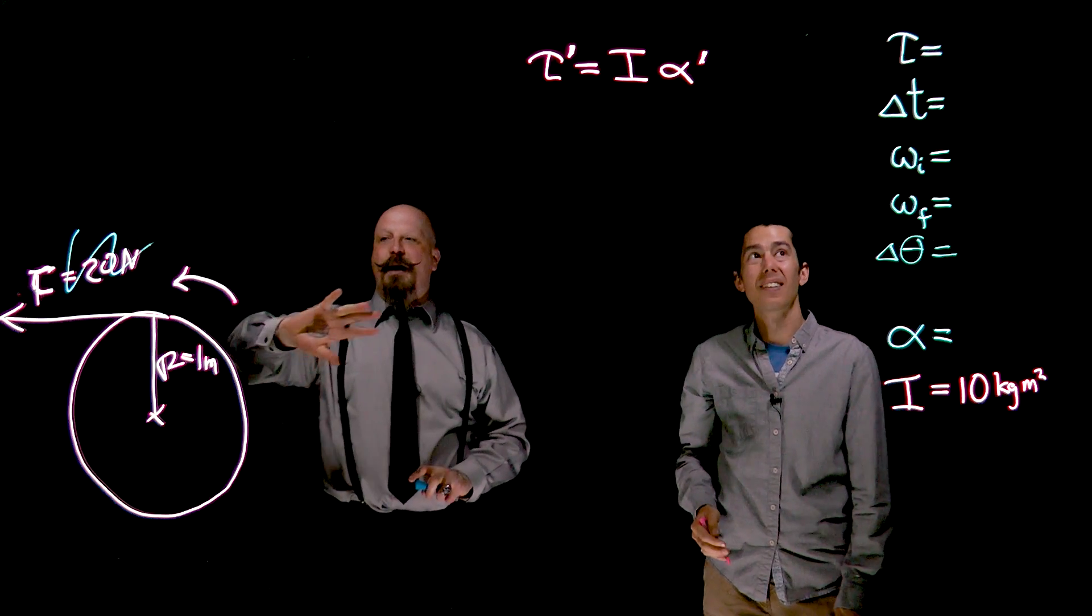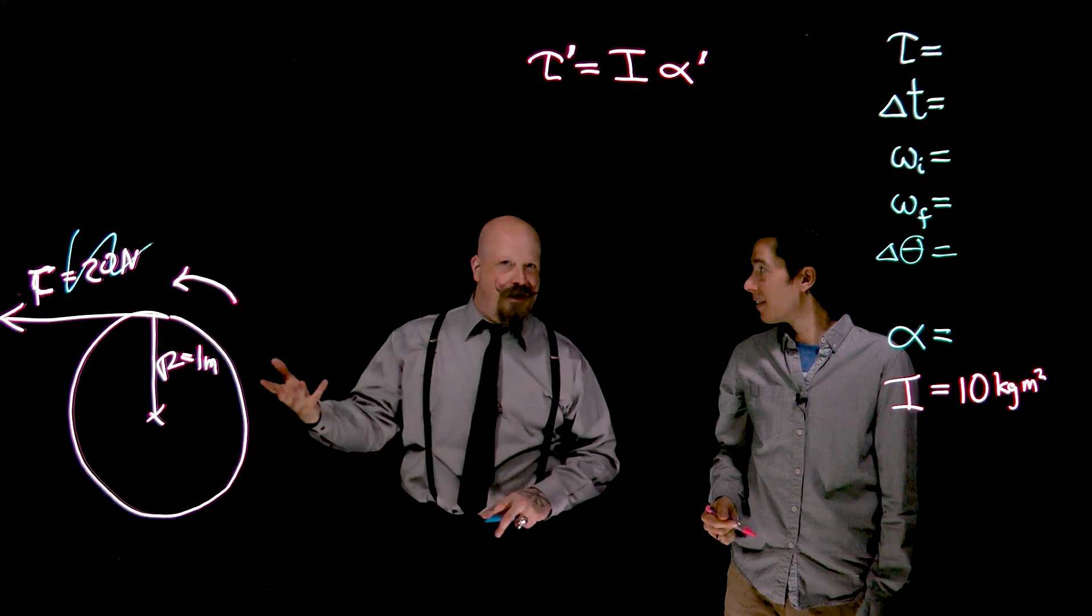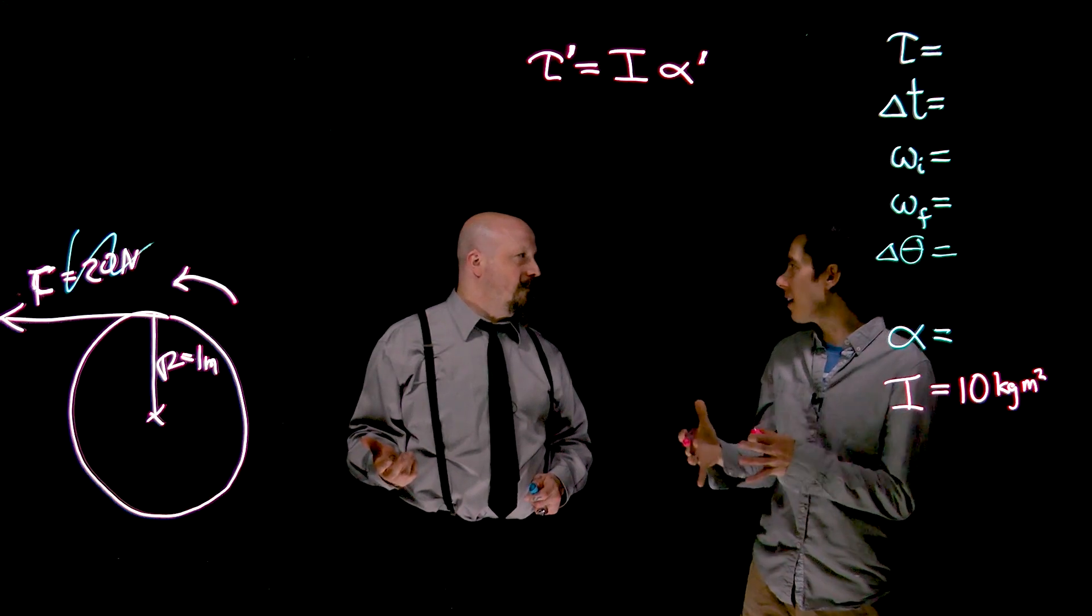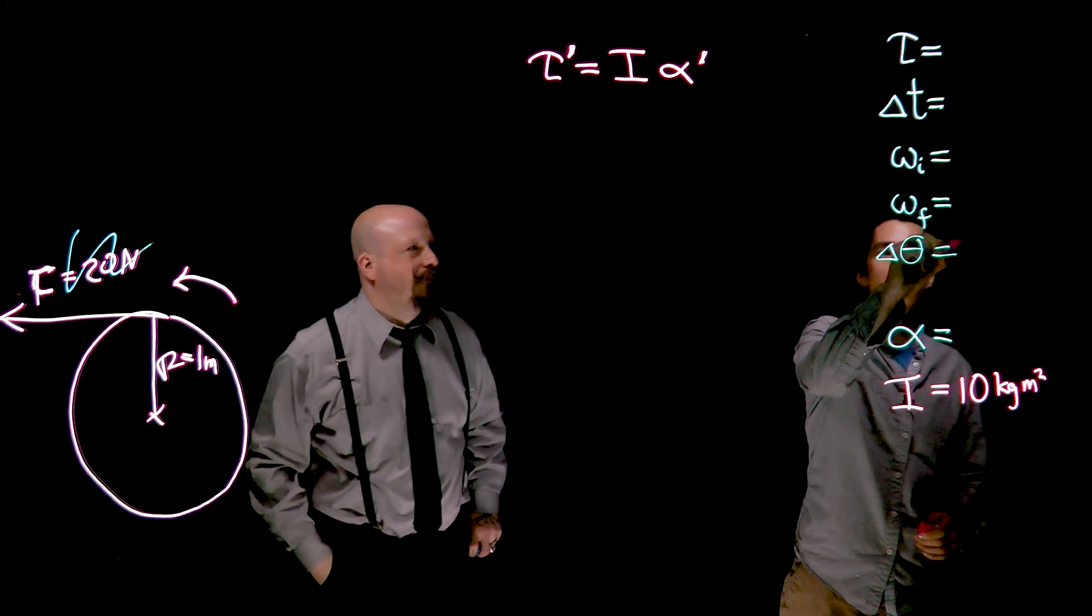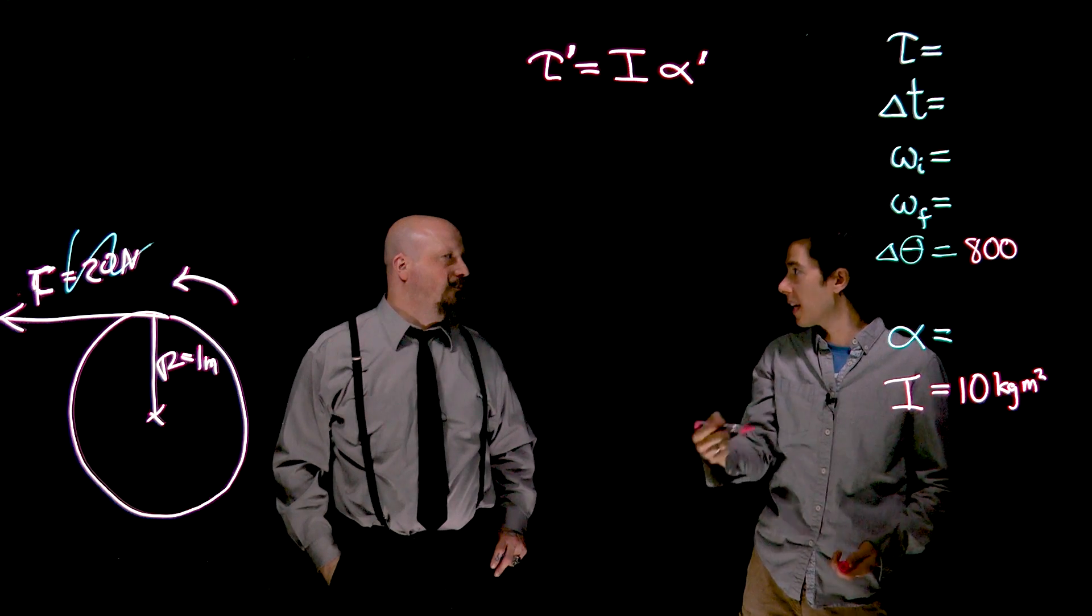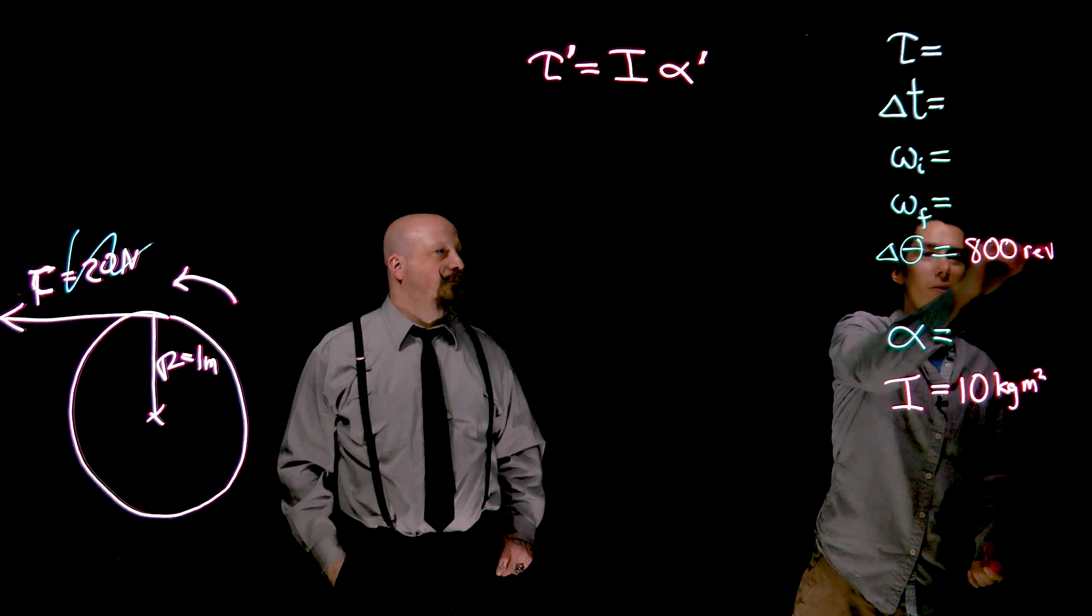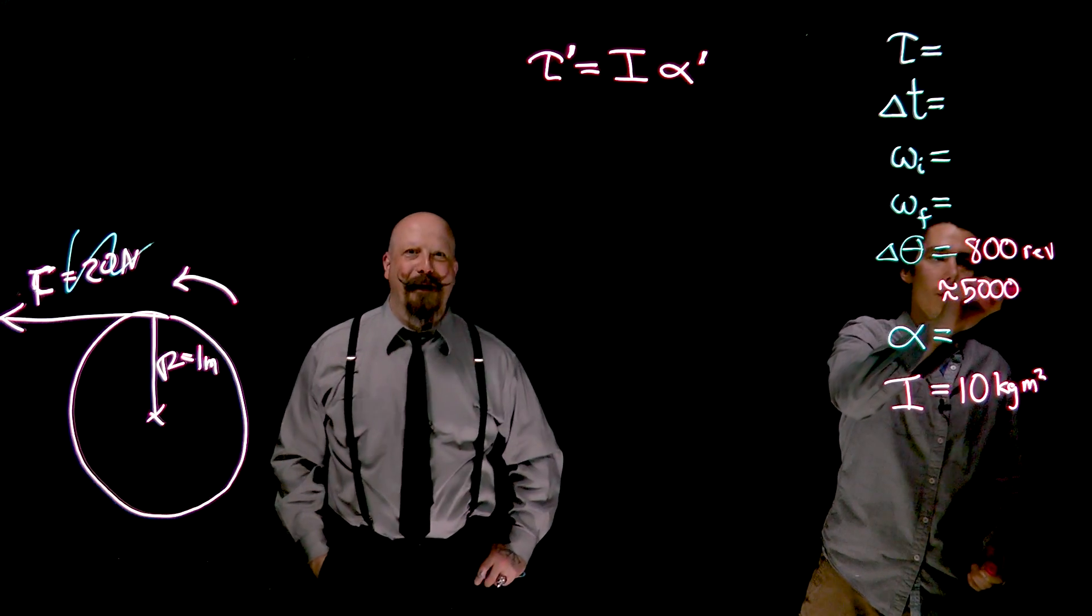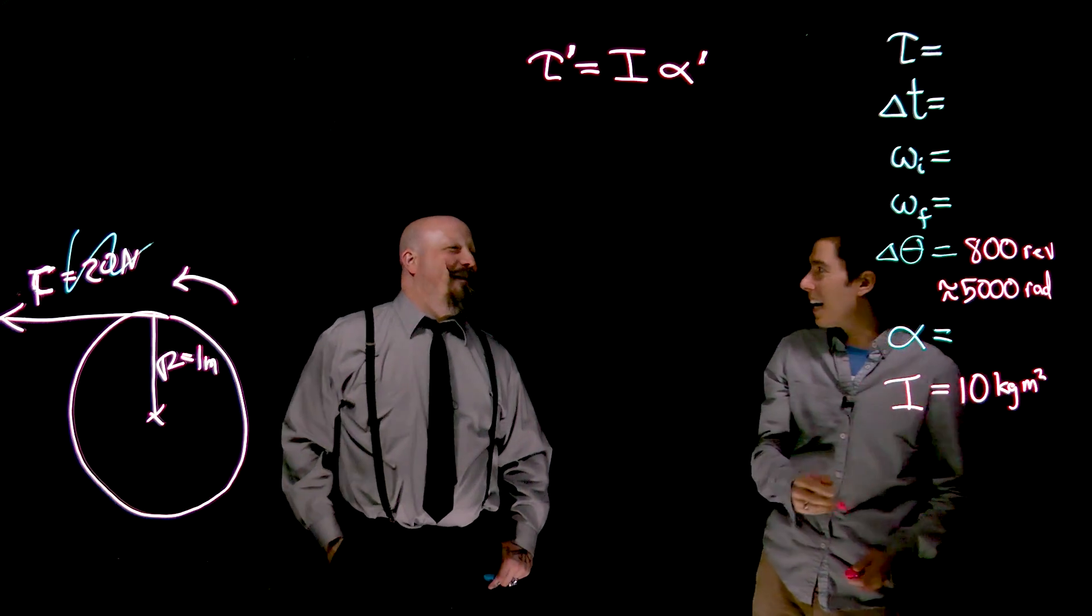All right. So in this case, let's say that when we remove that force, it still spins for a bit. So we'll say 1,000 revolutions. Let's say 800. Okay, 800. Just because 800 revolutions, when we multiply it by 2π to get it into radians, that works out to be about 5,000. And that's a nice number. That is a better number. Okay, let's do that. 5,000 rads.